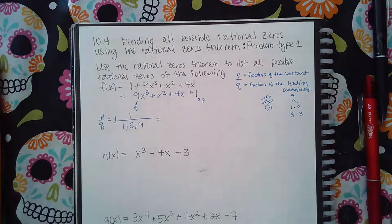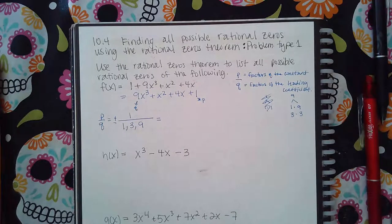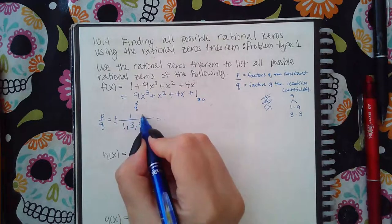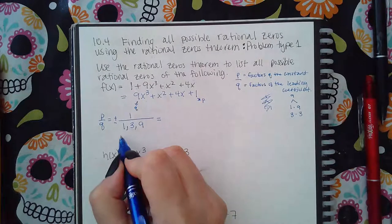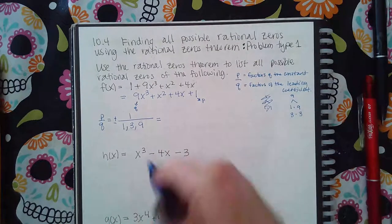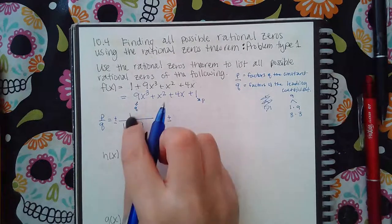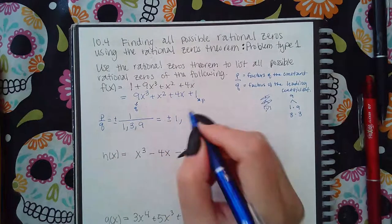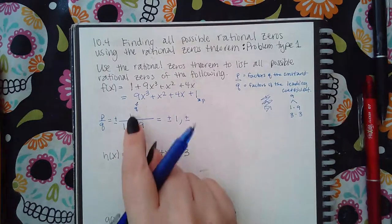And how do I get my values? You basically take each numerator value and place it over each denominator value, and don't repeat anybody in the list. So I'm going to say plus or minus 1 over 1, which is 1, plus or minus 1 over 3, which is 1 third,